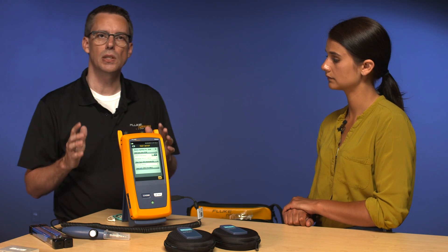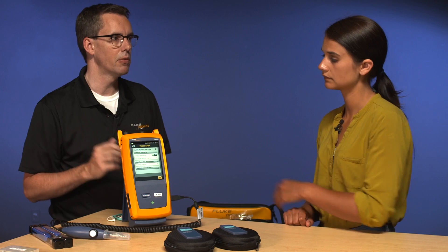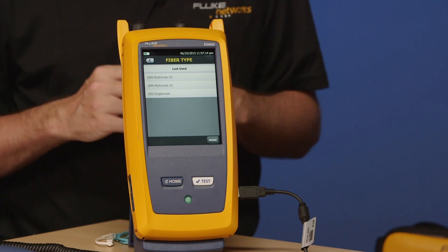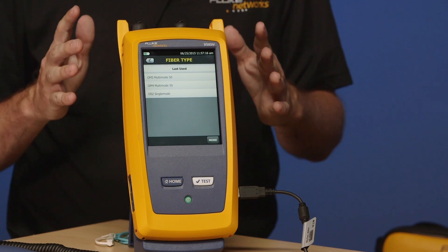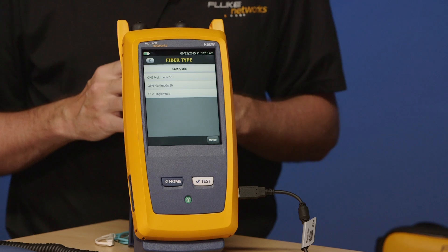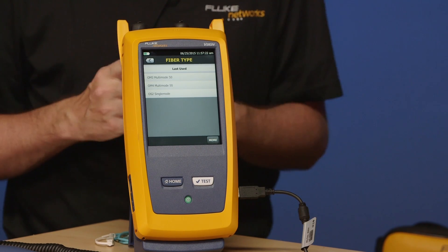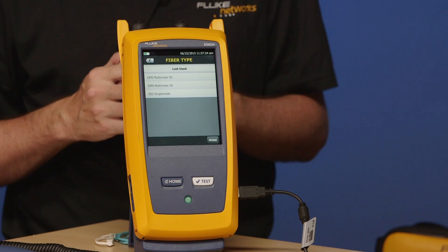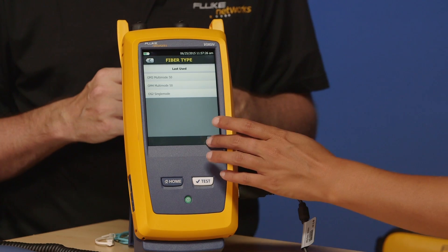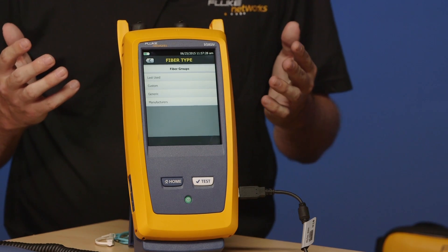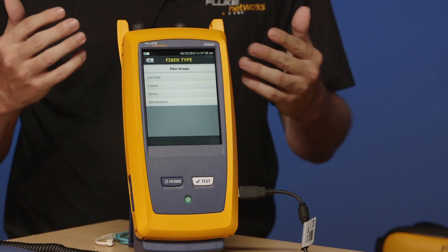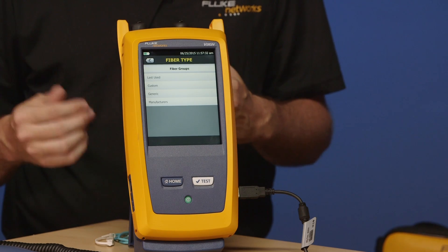So, next down on the list is fiber type. So, go ahead and tap fiber type for me. So, here, this is a brand new tester. So, these are the three options we've given you in there. And you've got to be thinking, there must be more fiber types than three inside the tester. And of course, you're absolutely right. Go ahead and tap more on there for me. So, just like the CertiFiber Pro, you get all the options such as generic and the manufacturer and custom.